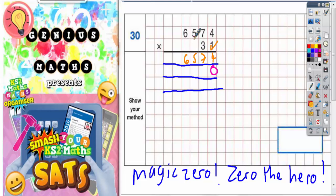So I want three fours, three sevens, three fives and three sixes. So three fours first are twelve.